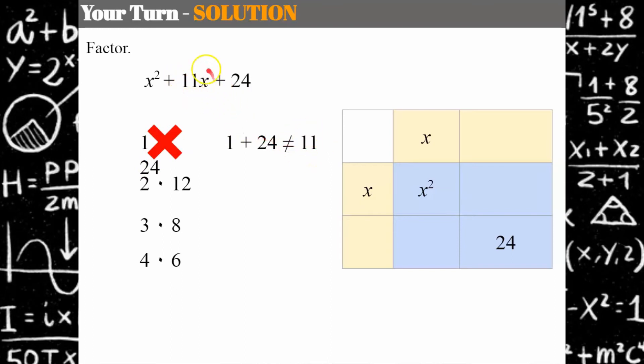I'm looking when I add them, they're going to get this because this is where it's coming from in our table. 2 plus 12 is not 11. 2 plus 12 is 14, so it can't be 2 and 12. Let's check 3 and 8. 3 plus 8 is 11. It checks, so I no longer even need to worry about the 4 and the 6.